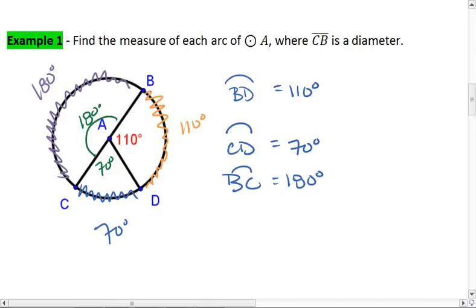Notice there are some other arcs we could talk about as well. We have arc BD going the other way. But in order to show that we're using that bigger arc, we're going to give this three letters, BCD. That tells us that we go from B to D by passing through point C.